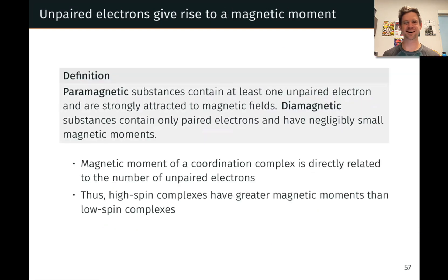What does all this crystal field theory stuff have to do with magnetism? Well, electrons have a magnetic moment. They act like little tiny magnets, and in particular, unpaired electrons.